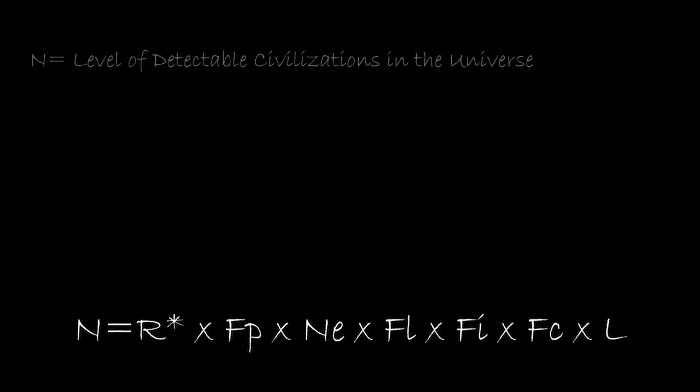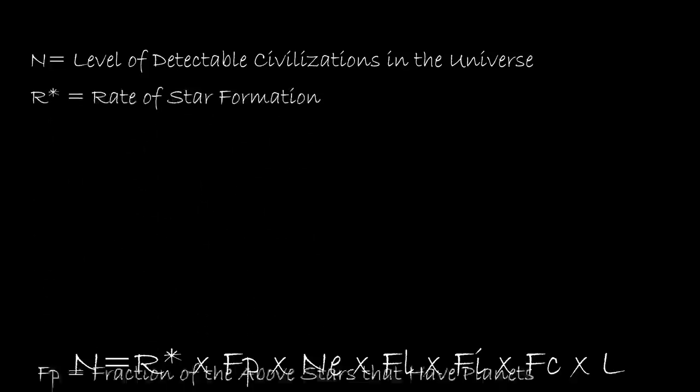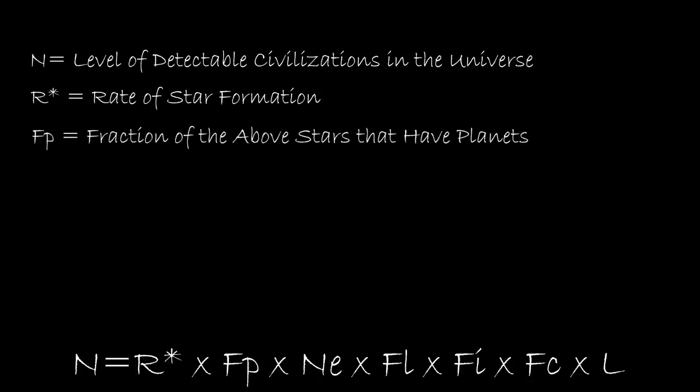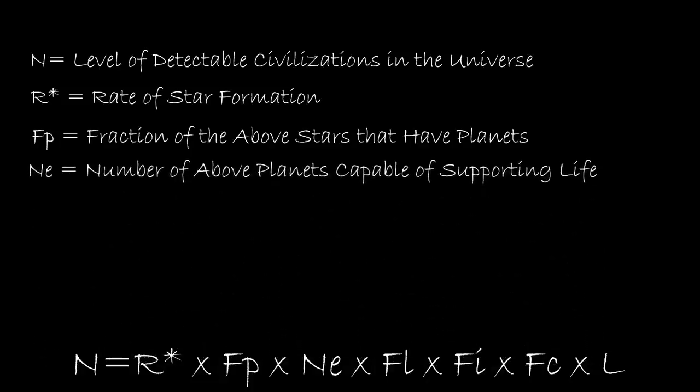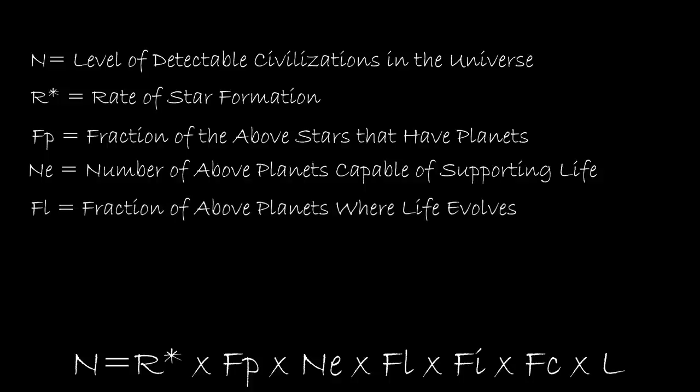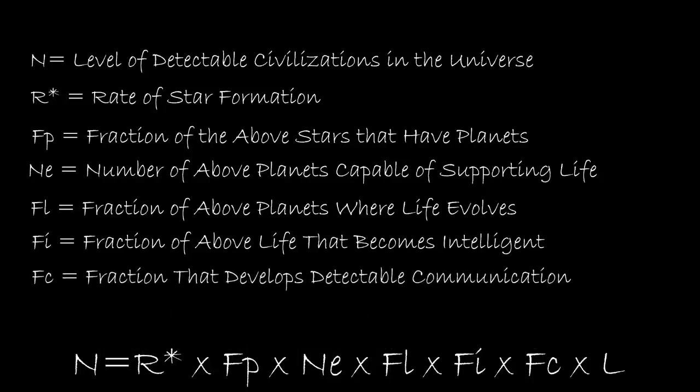N is the level of detectable civilizations in the universe. R asterisk is the rate of star formation. Fp is the fraction of the above stars that have planets. Ne is the number of above planets capable of supporting life. Fl is the fraction of above planets where life evolves. Phi is the fraction of above life that becomes intelligent. Fc is the fraction that develops detectable communication. L is the longevity of communication.